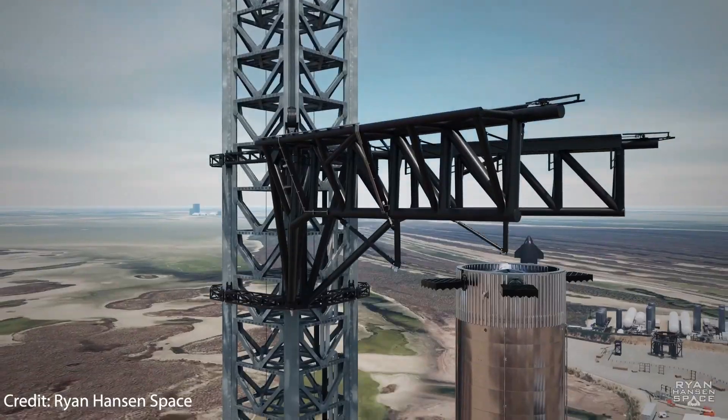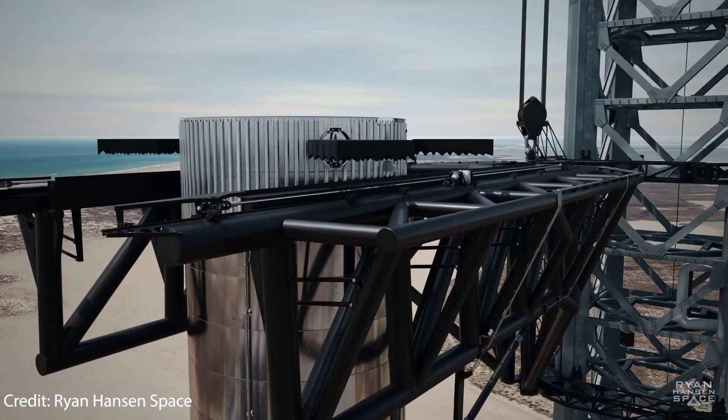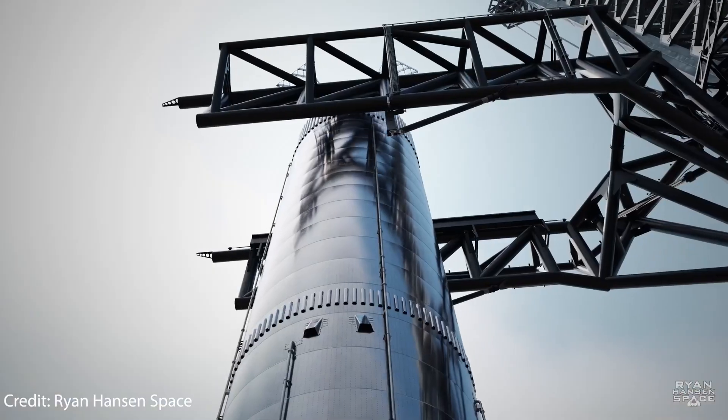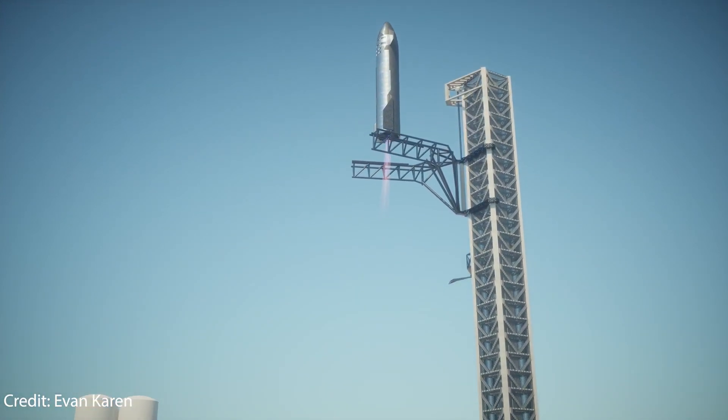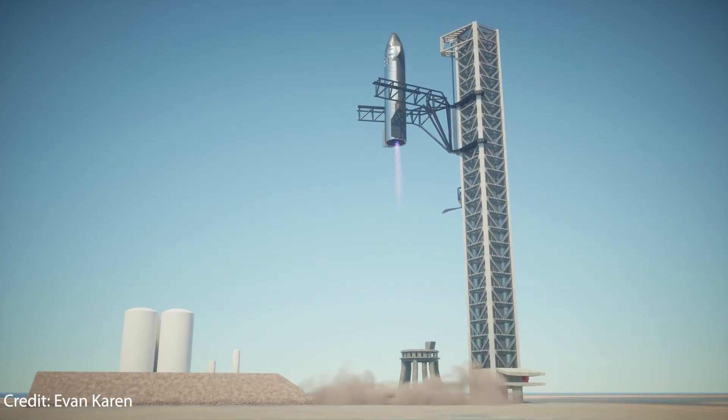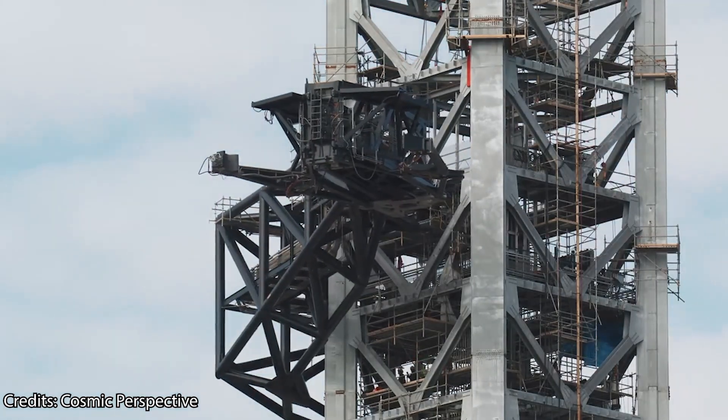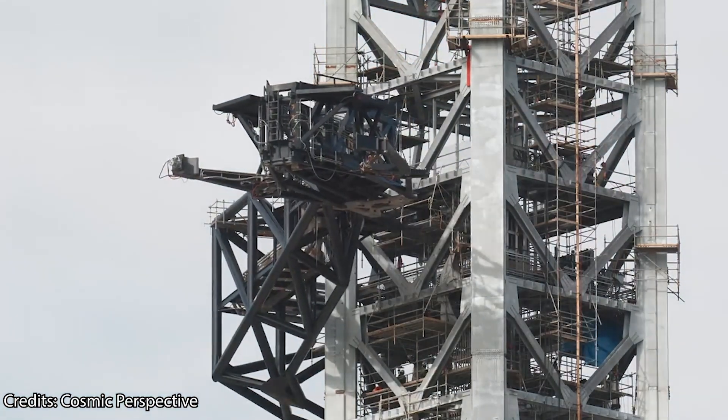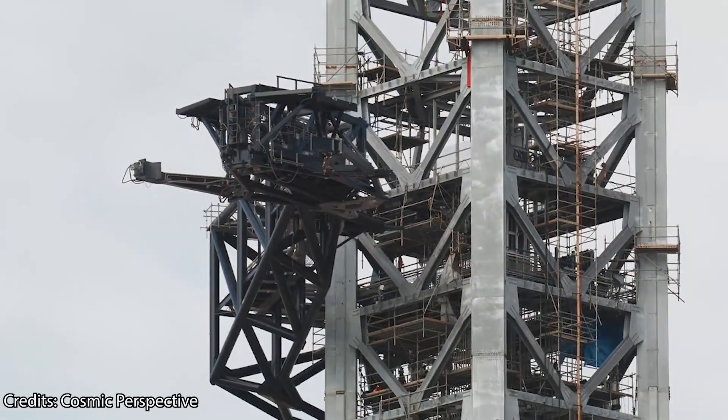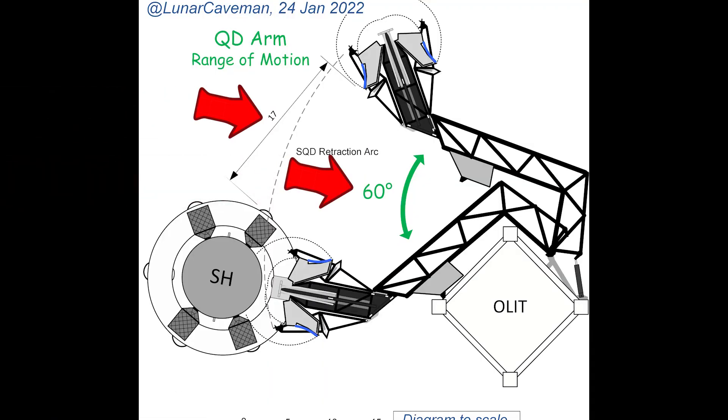In order for the catching arms or chopsticks to lift the ship all the way up, be it from the ground at the side of the tower or after catching it mid-air and then bring it into position above the Super Heavy booster, the QD arm will have to move away from the tower to make room for the chopsticks and the ship, opening up by about 60 degrees or 17 meters away from the launch table.